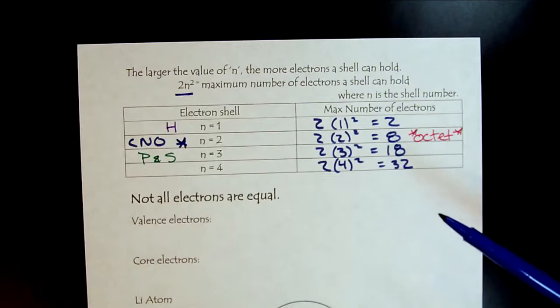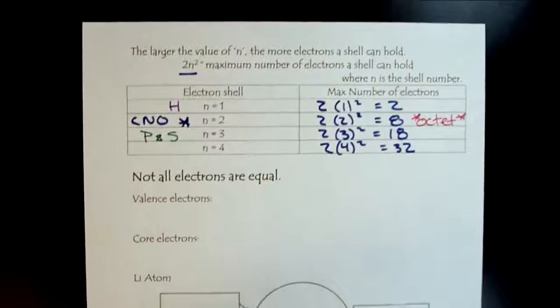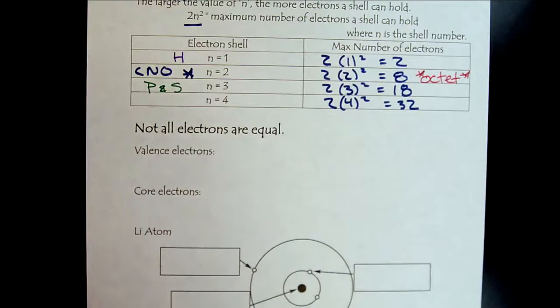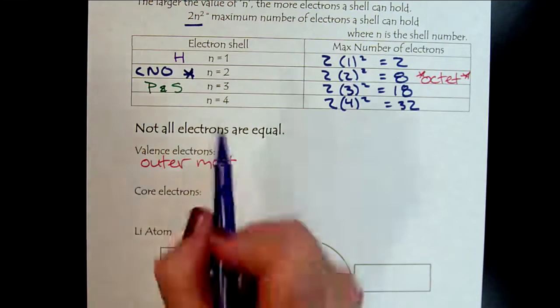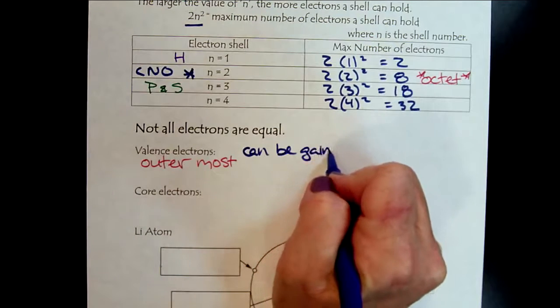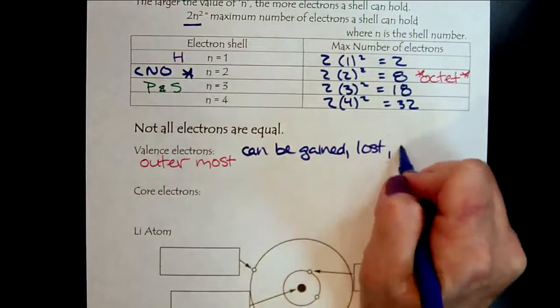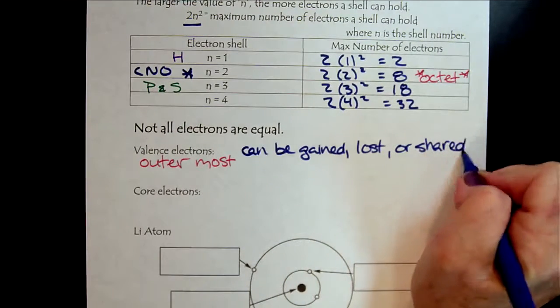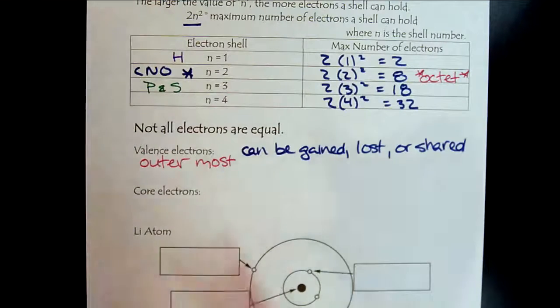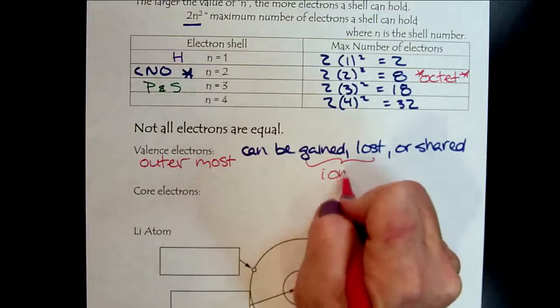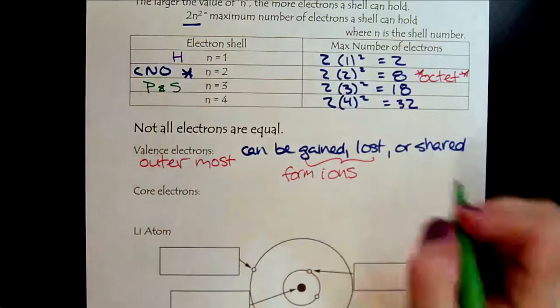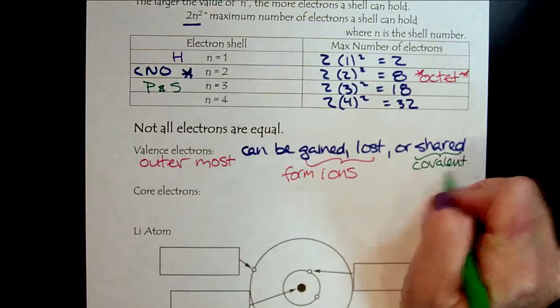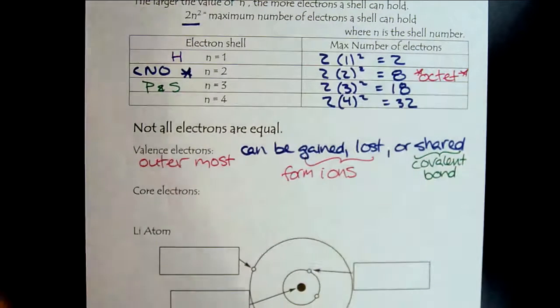So because the electrons are in different shells, they are not all created equal. This is a really important concept. The valence electrons, those are the outermost electrons. These are the electrons that can be gained, lost, or shared. As we continue through the course, we will see that when they're gained or lost, this is when ions form. And if they're shared, this would be a covalent bond.